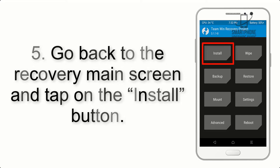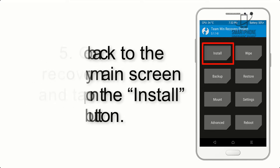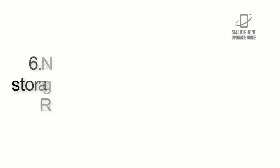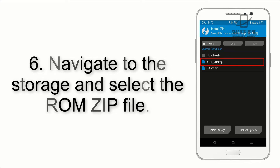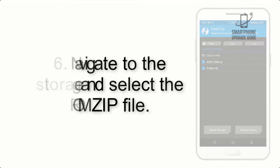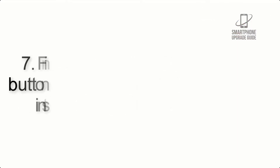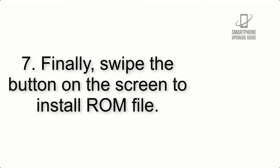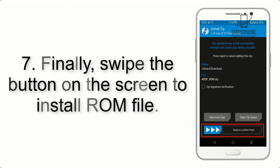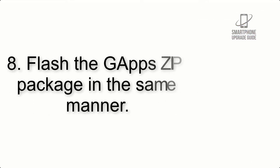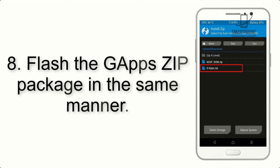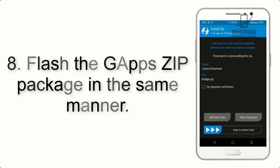Step 5: Go back to the recovery main screen and tap on the Install button. Step 6: Navigate to the storage and select the ROM zip file. Step 7: Finally, swipe the button on the screen to install the ROM.